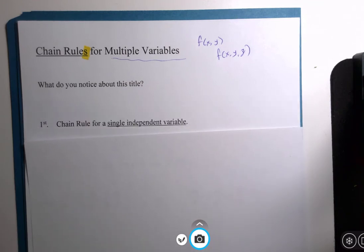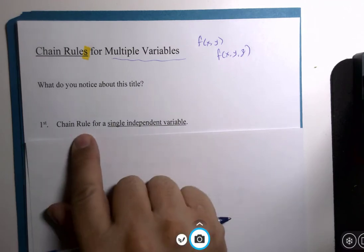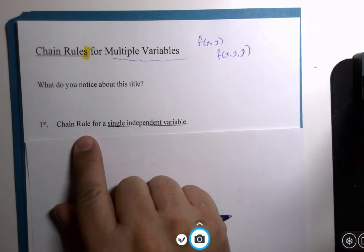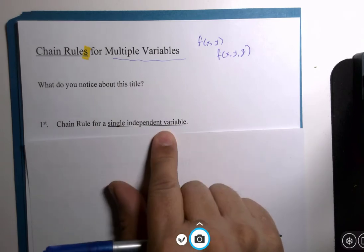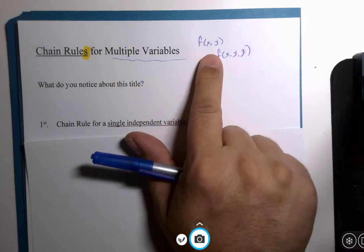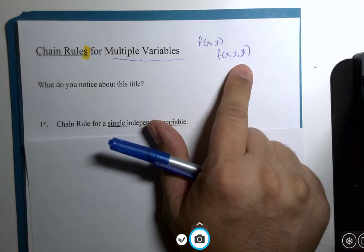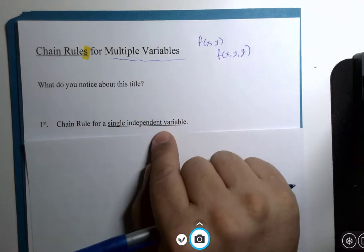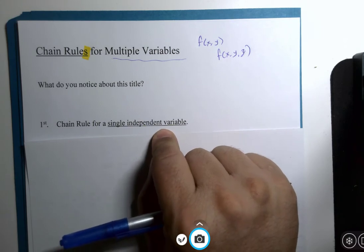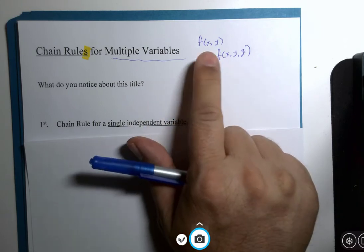So the first type of chain rule we're going to look at and the one that we're going to spend the most time on is the chain rule for what's called a single independent variable. So x and y or x, y, and z are the variables of the function. This independent variable is something not those.